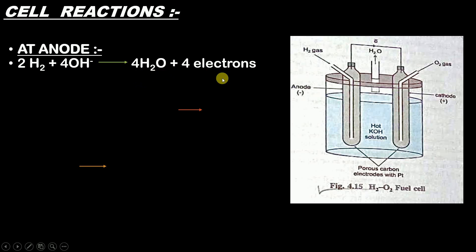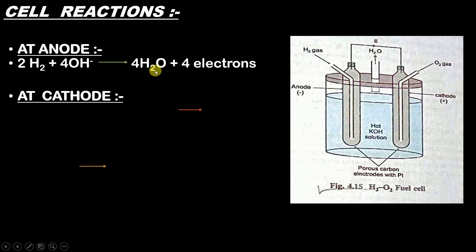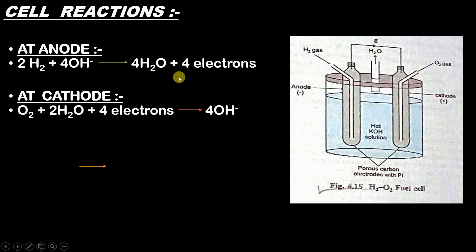At the cathode, reduction takes place, which is the gain of electrons. The 4 electrons released at the anode travel through the conductor and reach the cathode. At the cathode, O2 gas takes those 4 electrons plus 2 H2O molecules out of the 4 H2O molecules produced at the anode, and forms 4 OH⁻ ions.